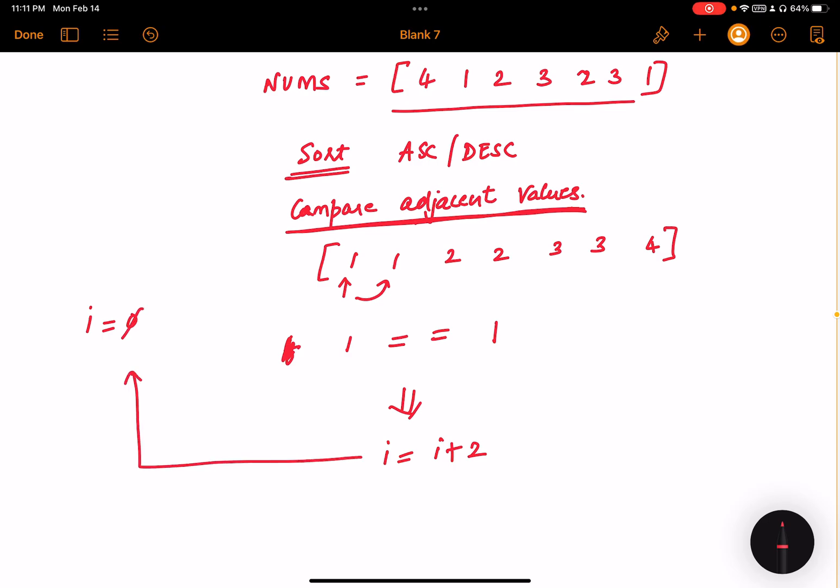So we will continue the flow. So i is equal to i plus two, so the new value of i will become two. So the next two values that we will be comparing correspond to two comma two. They are still equal, so we will increment our i.